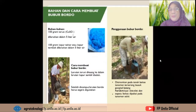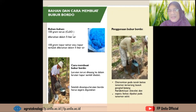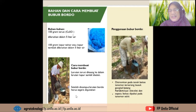Bahan dan cara membuat bubur bordo yang dapat dilakukan oleh petani: membeli 100 gram trusi atau CuSO4 di toko kimia, dilarutkan dalam 5 liter air. Kemudian ditambahkan 100 gram kapur tohor atau kapur tembok yang dilarutkan tersendiri dalam 5 liter air. Larutan trusi dituangkan ke dalam larutan kapur sambil diaduk. Setelah dicampur, larutan bordo harus segera digunakan, yaitu disiramkan pada tanah bekas tanaman terserang busuk pangkal batang, atau untuk merendam dan mencuci alat-alat dan sepatu bekas dipakai pada tanaman sakit.